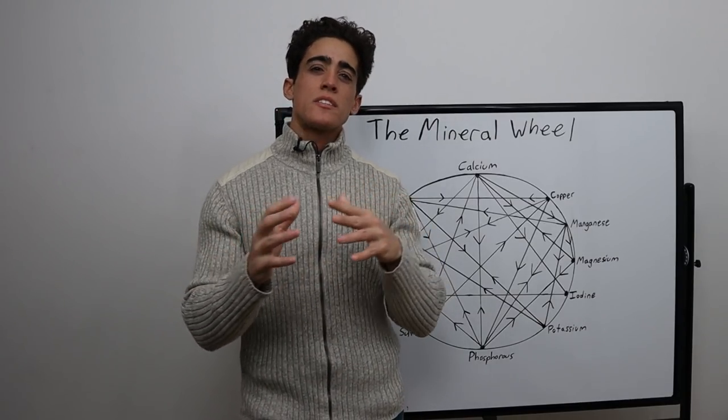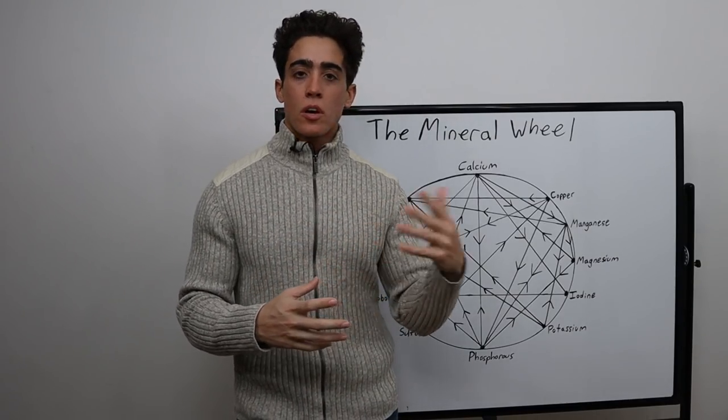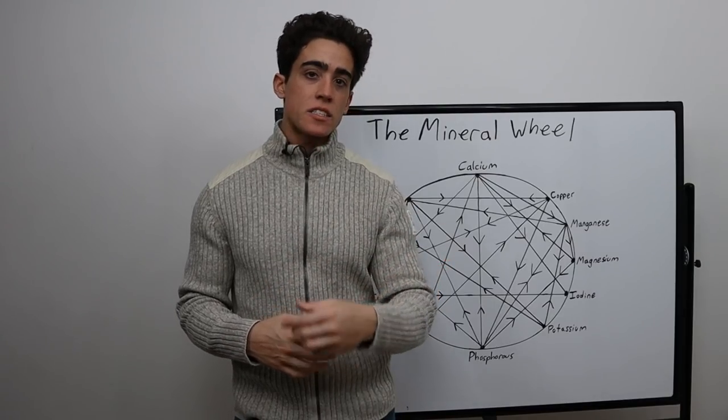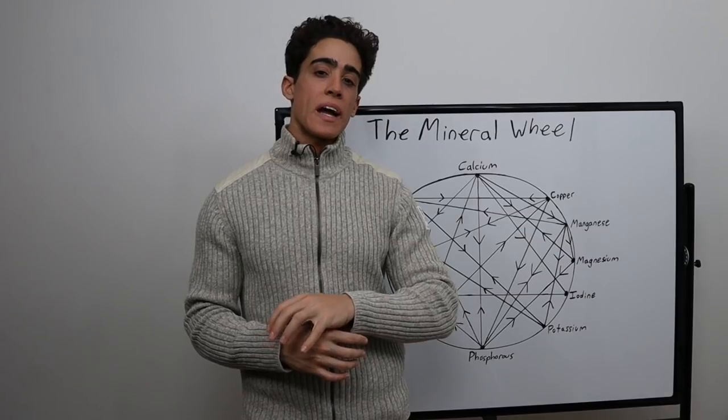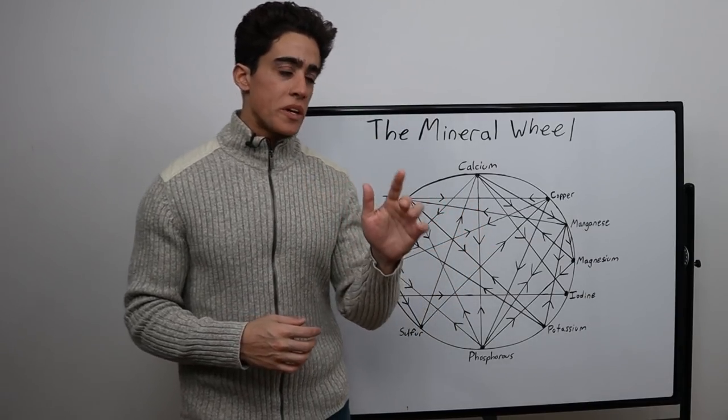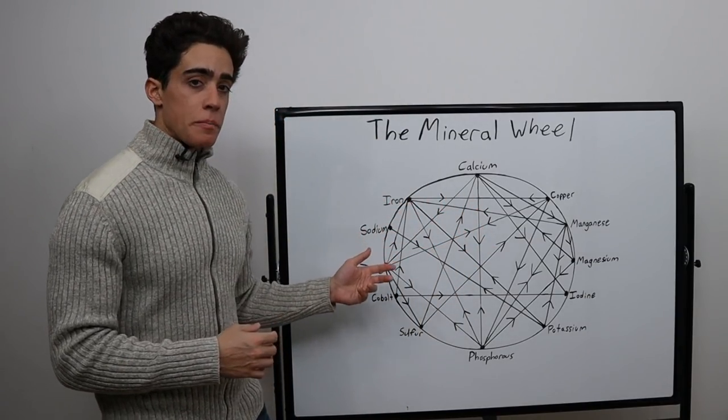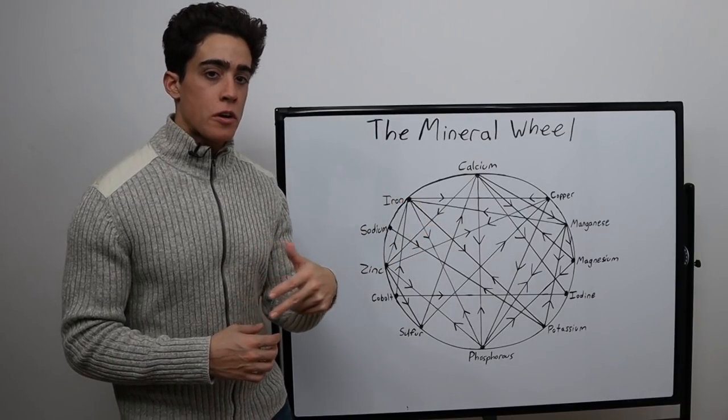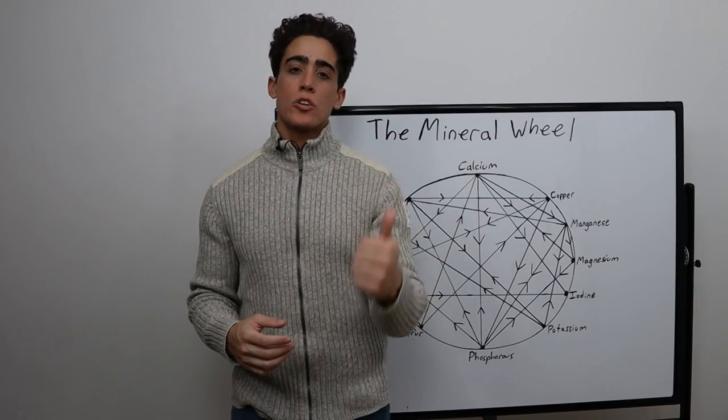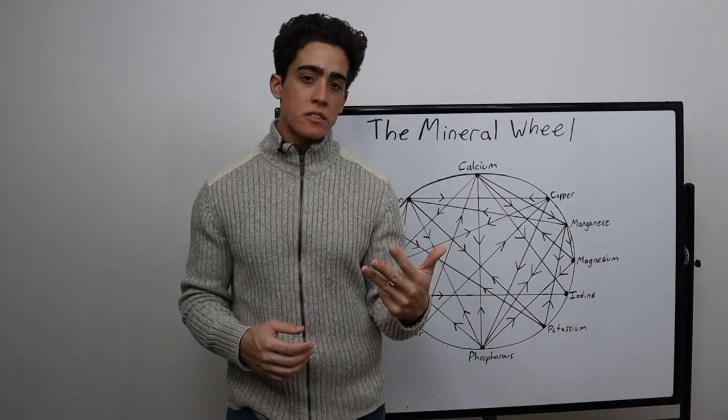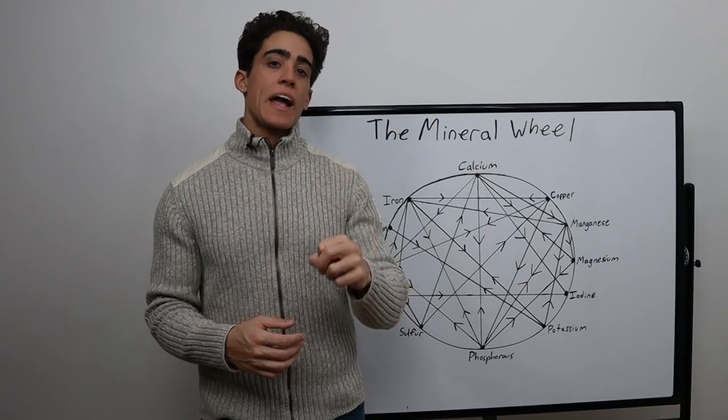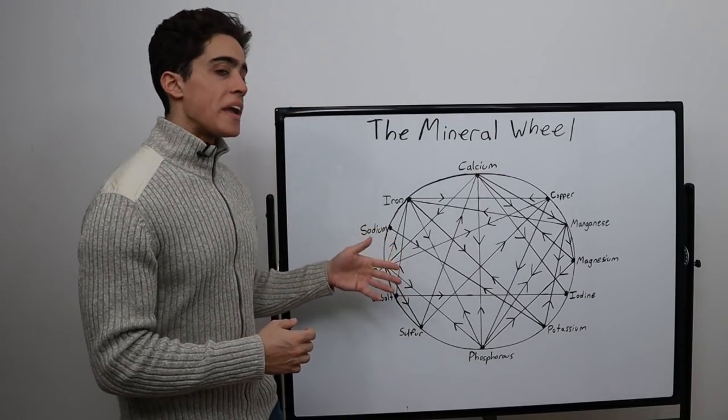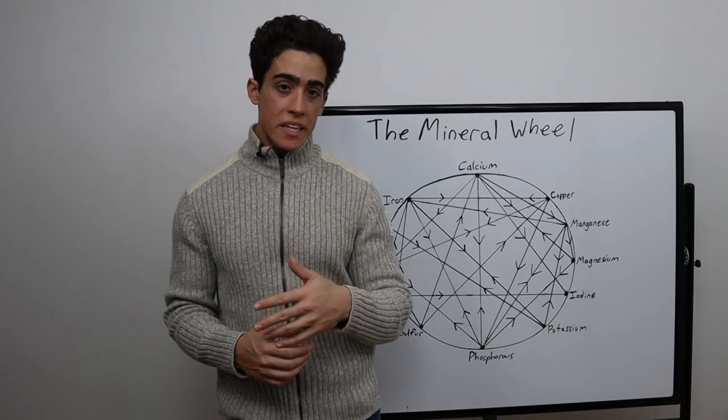Next up, we have sulfur. This is another problematic mineral on carnivore, even vegan diets. Meat, eggs, dairy, cruciferous vegetables, all incredibly high in sulfur. One mineral we don't have on here is molybdenum, which is antagonistic to sulfur, and something that's high in legumes, lentils, peas, beans. I put molybdenum in the trace mineral supplement in the naturally occurring amount if you ate those foods on a consistent basis.